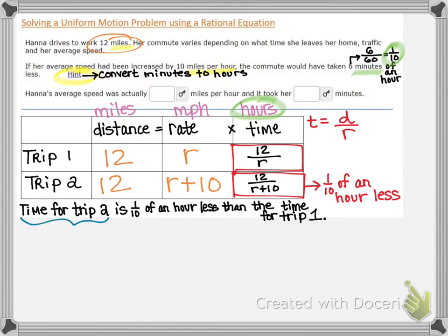So the time for trip two, we've represented that as the ratio of 12 over R plus 10 is—remember anywhere you see the word is, that is an equal sign. So 12 over R plus 10 equals, now it's one tenth of an hour less than the time for trip one. So we want to start the right side of our equation with the ratio for the time for trip one, which is just 12 over R. And then from that, we subtract one tenth of an hour.